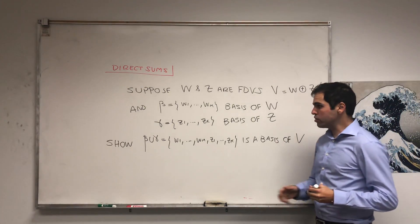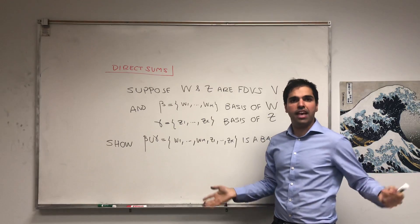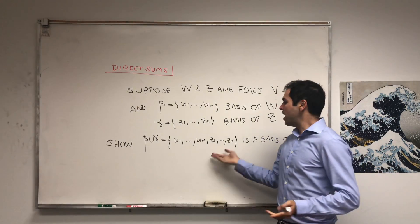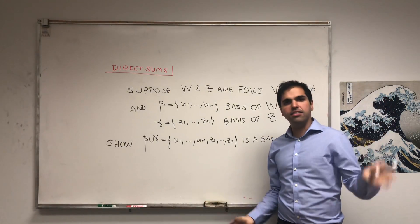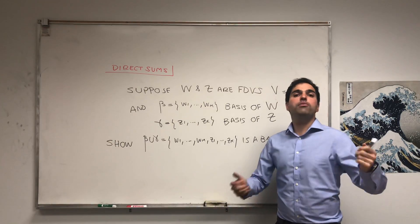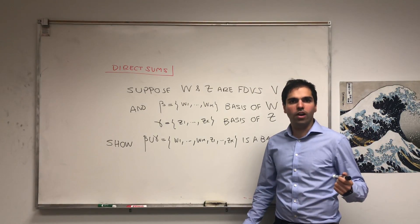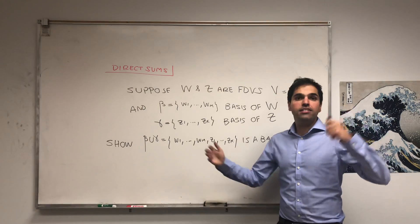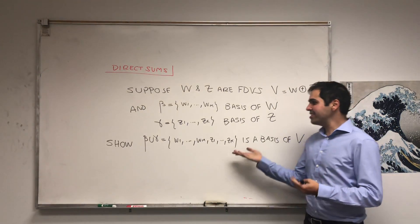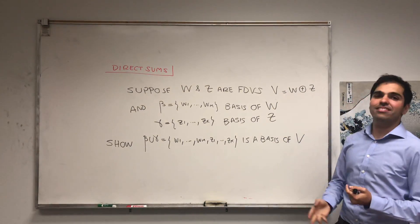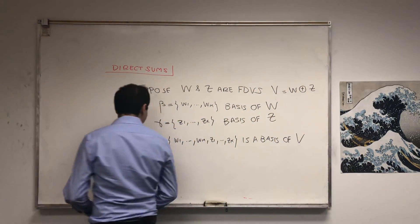For example, if you start with a basis for the x-axis, which is {(1,0)}, and a basis for the y-axis, which is {(0,1)}, and you put them together to get {(1,0), (0,1)}, that is a basis for R2. It's not a coincidence — it's based on this fact.